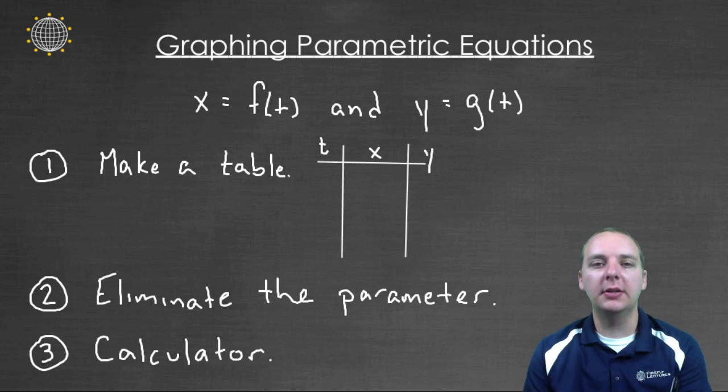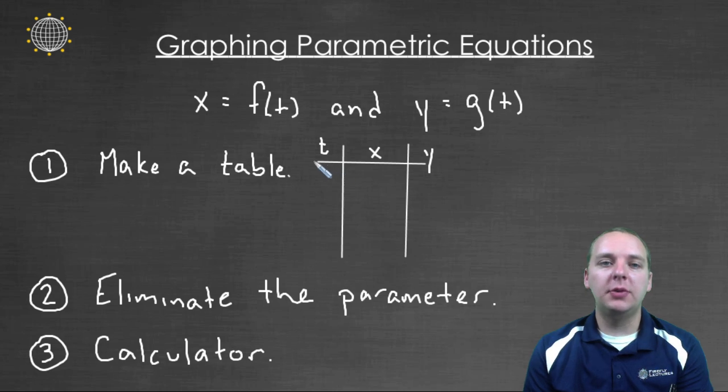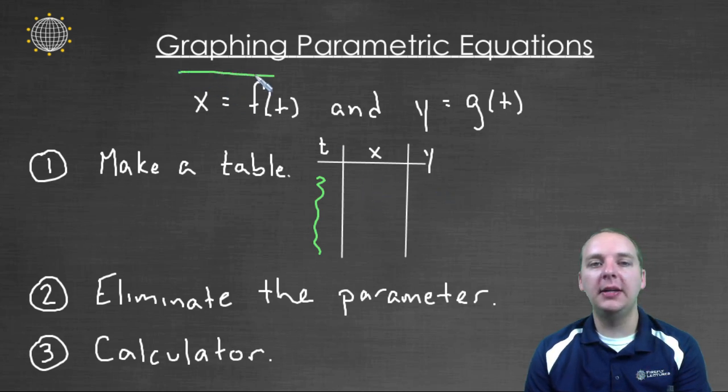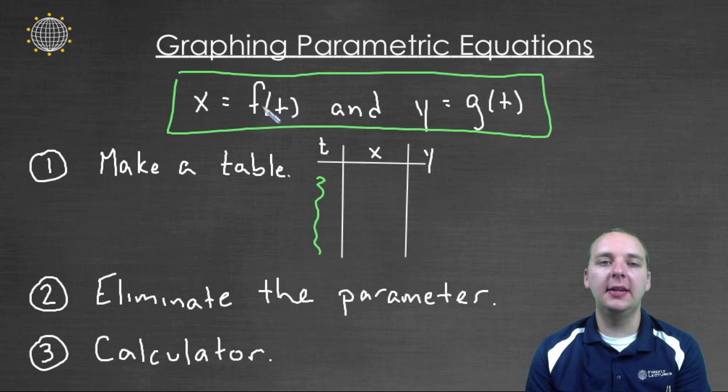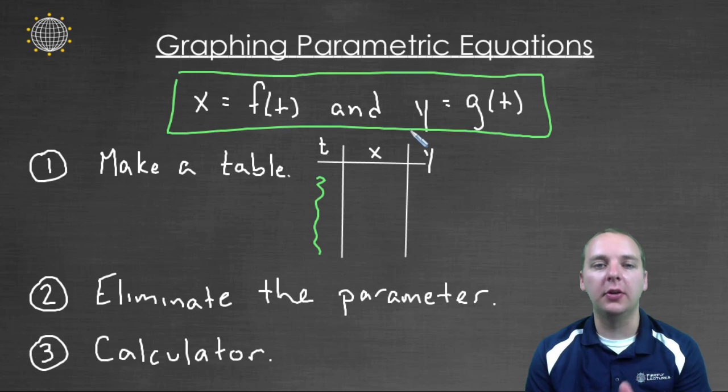Basically the way it works is you have three columns: t's, x's, and y's. You pick a few different t's, and then you see what the x's and y's are based off of your parametric equations. Because when you plug t into f and t into g, that's going to tell you what the x, y locations are going to be at particular times.